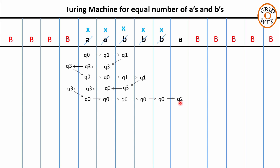Now the responsibility of state q2 is to search for A while skipping Bs and Xs. So q2 on reading A will replace it with X, take a left move, and change its state to q3. The responsibility of q3 is to reach the starting symbol of the string. So q3 skips all the Xs, As, and Bs and moves towards the left. On reading the blank symbol, q3 becomes aware it has moved one step extra.